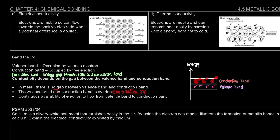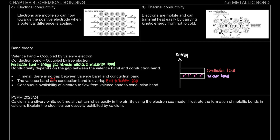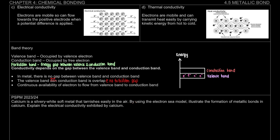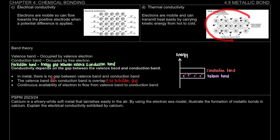Now let's look at a past year question. The question states: calcium is a silvery-white soft metal that tarnishes easily in the air. By using the electron sea model, illustrate the formation of metallic bond in calcium. The electron sea model looks like this — so for calcium, we know it will donate two electrons to form Ca²⁺ plus two electrons.